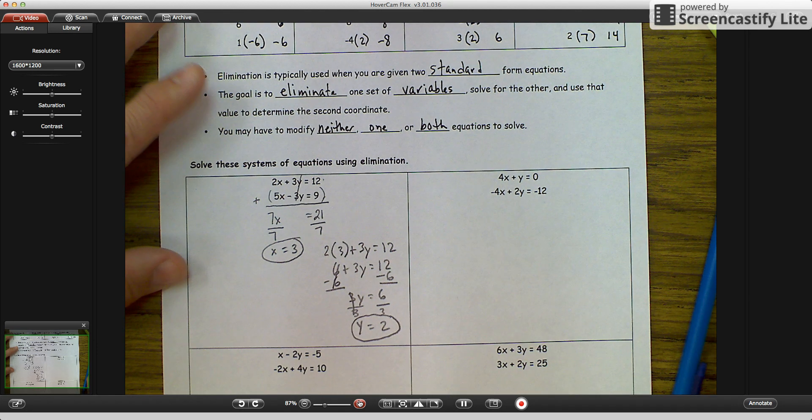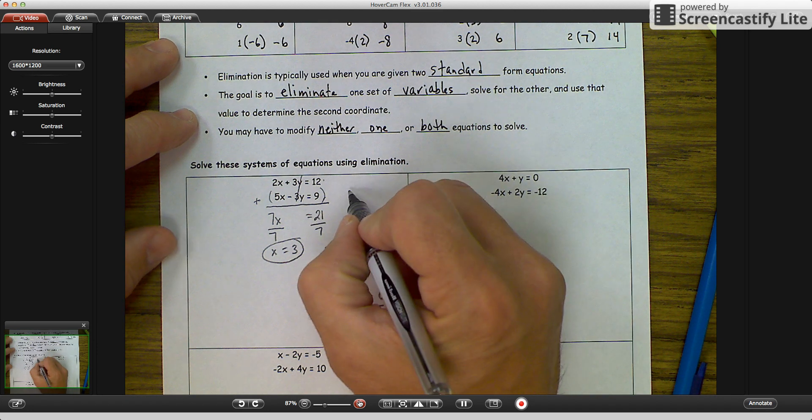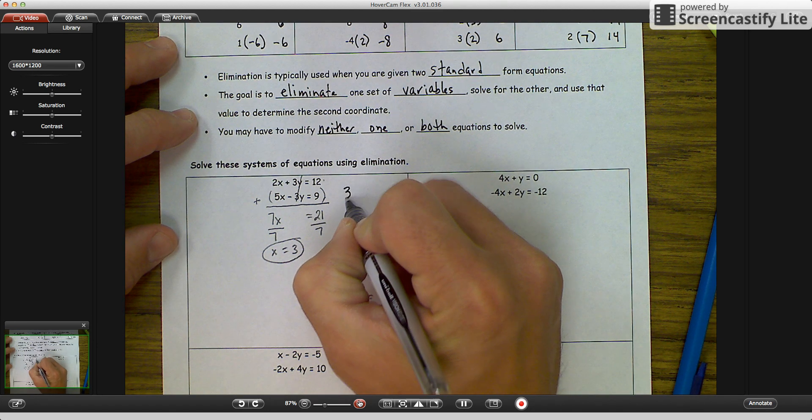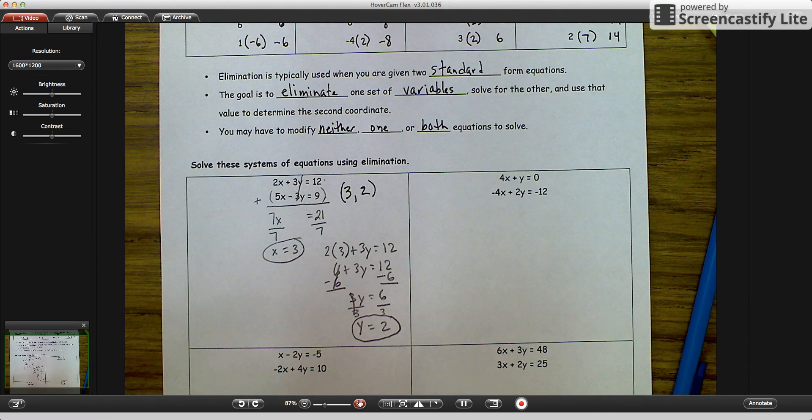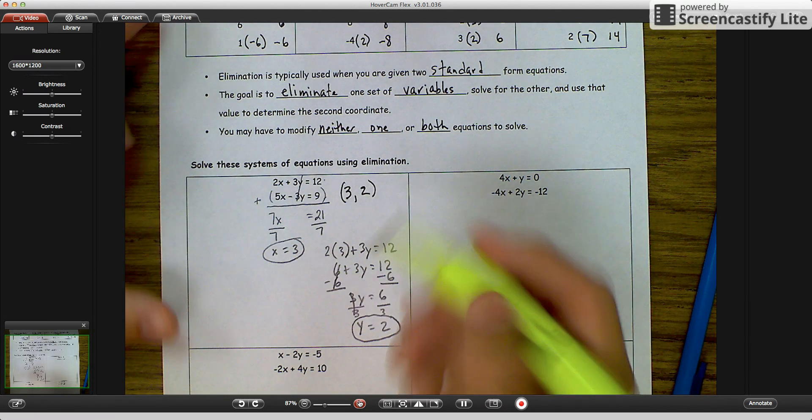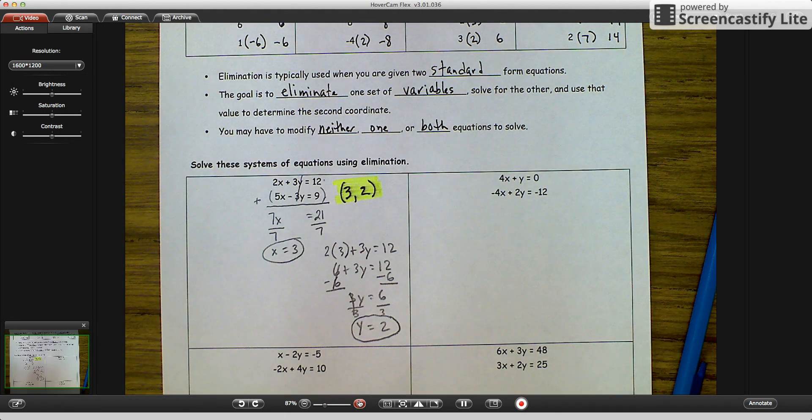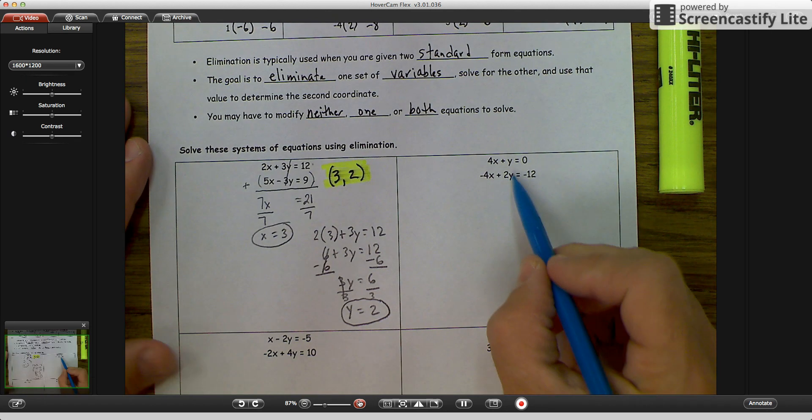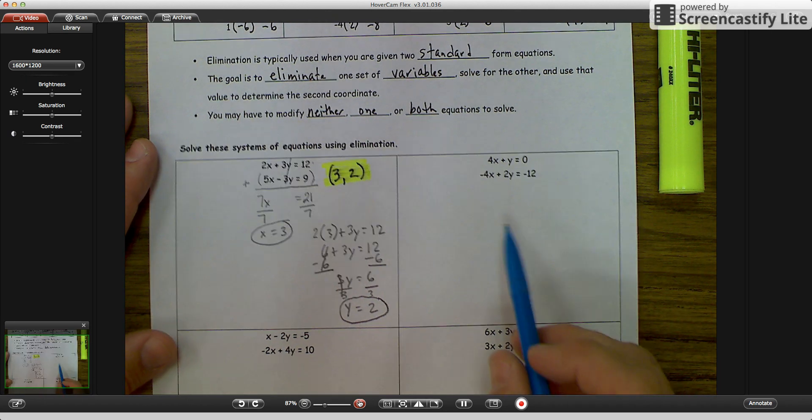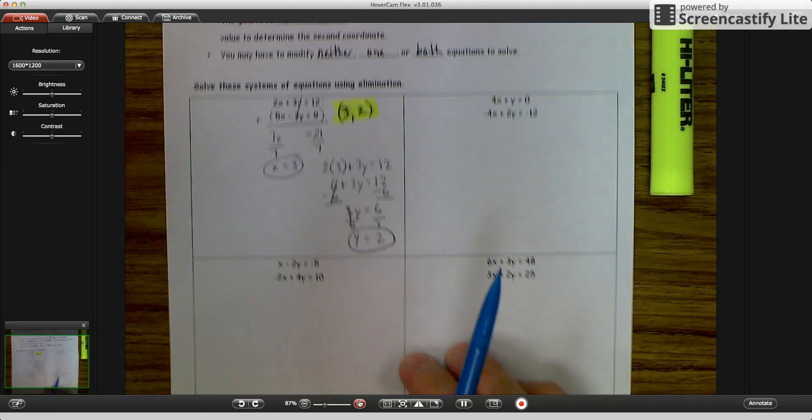So our answer for the point where these two equations intersect is 3, 2. That would be our solution. Okay, and I will highlight that. This one over here on the right side, I would like you to try on your own. And you are going to bring that to class tomorrow. And we will go over the answer then.